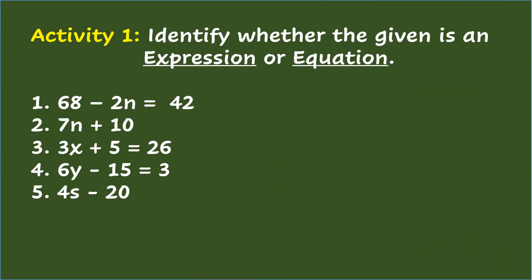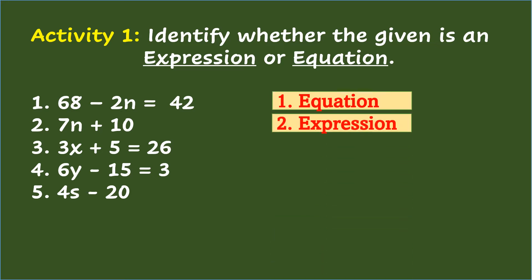Activity 1: Identify whether the given is an expression or equation. Number 1: 68 minus 2n equals 42 — the answer is Equation. Number 2: 7n plus 10 — the answer is Expression. Number 3: 3x plus 5 equals 26 — the answer is Equation.